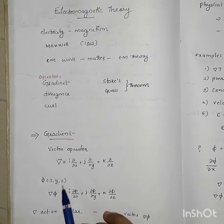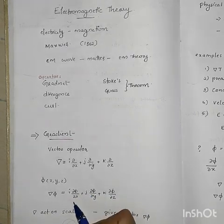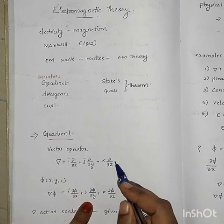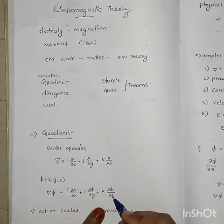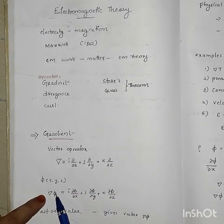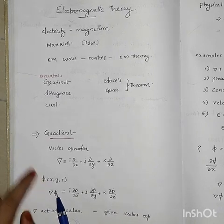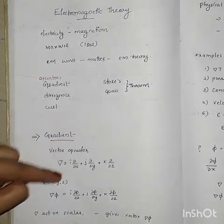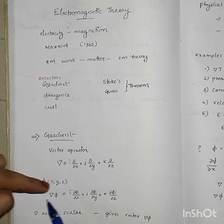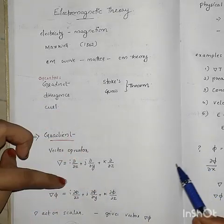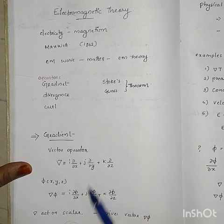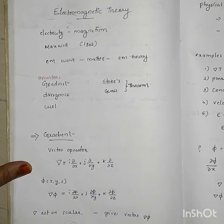Del phi is equal to i ∂φ/∂x plus j ∂φ/∂y plus k ∂φ/∂z. Del phi acting on a scalar quantity phi gives a vector result.